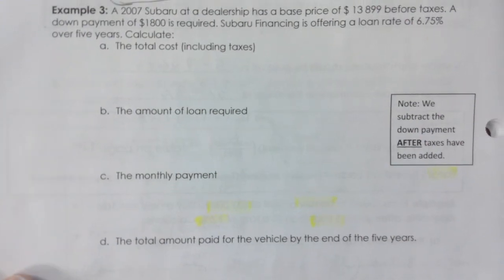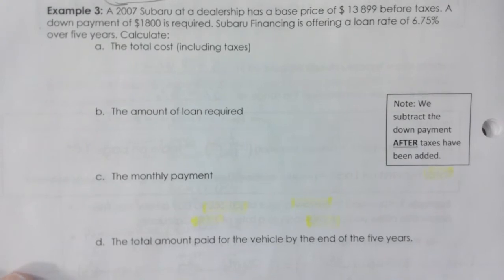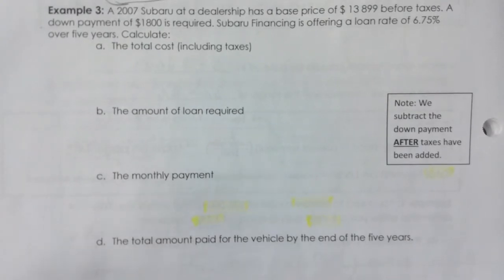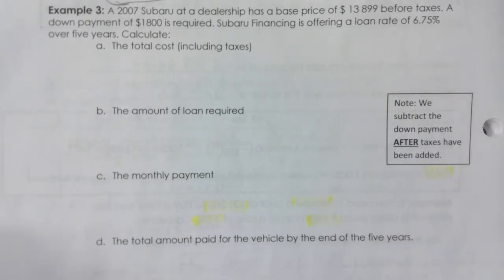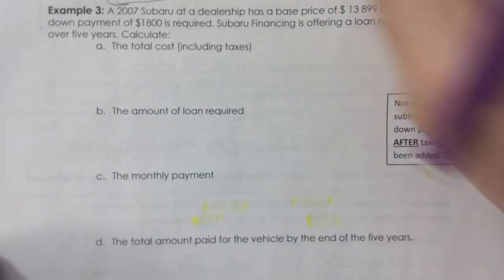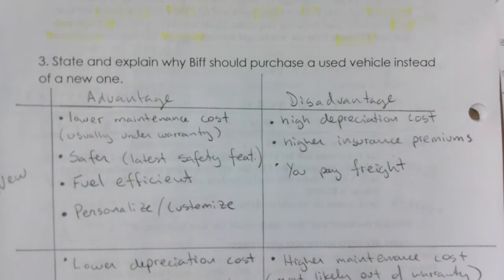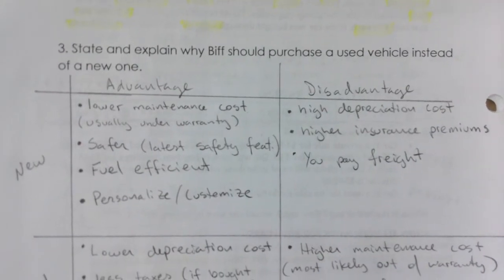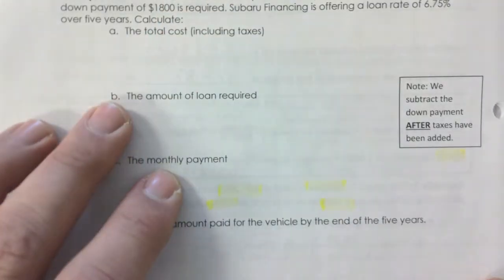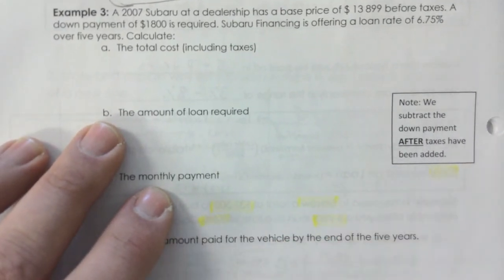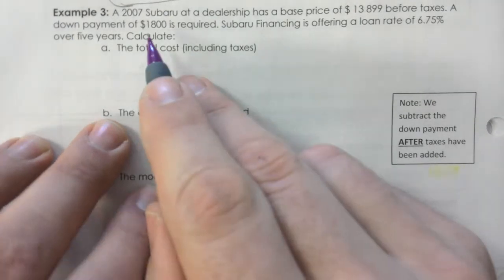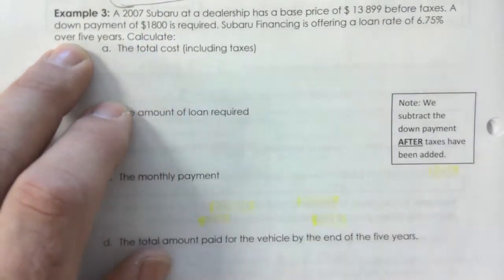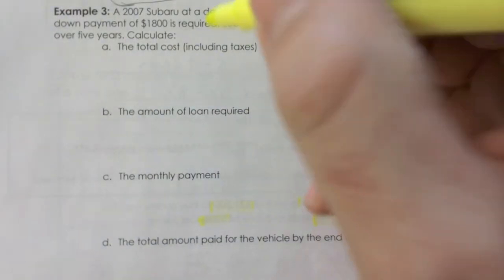I put this together over years, so sometimes it doesn't flow as nicely — it's still a work in progress, but it has everything you need. Just a quick recap: we talked about the advantages and disadvantages of buying new versus used, and you should have something on your study sheet about that. That chart summarizes it, and you'll need to know how to explain why.